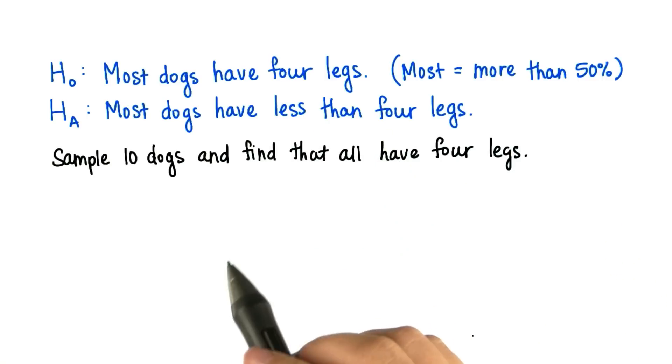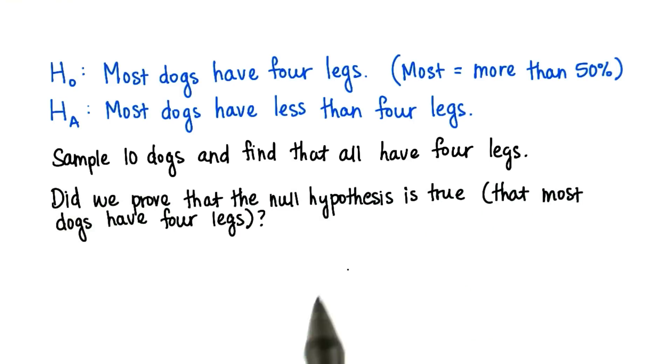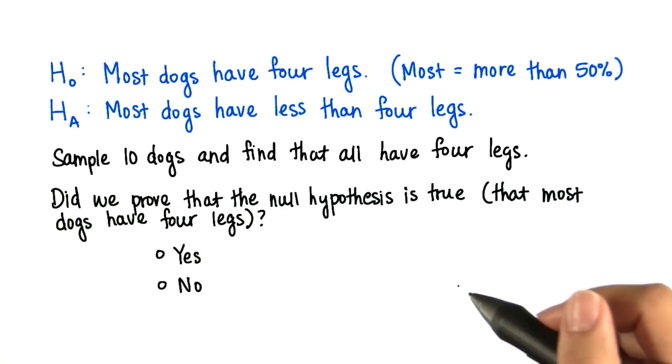Now let's say we sample 10 dogs and find that all of them have four legs. Did we prove that the null hypothesis is true, that most dogs have four legs?